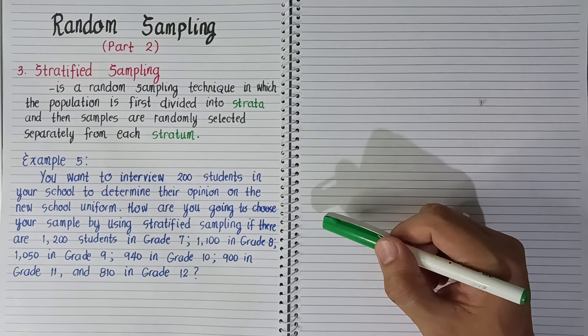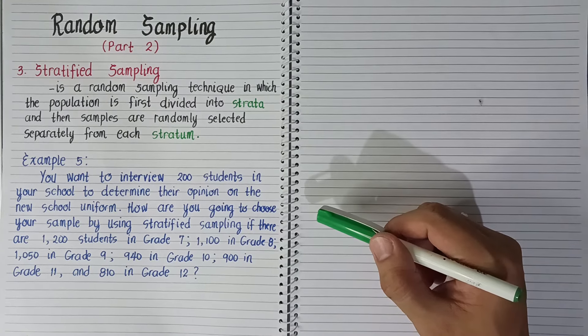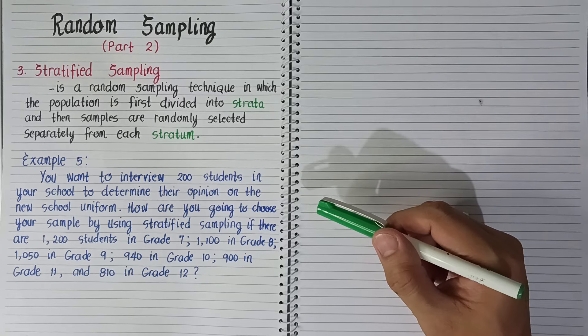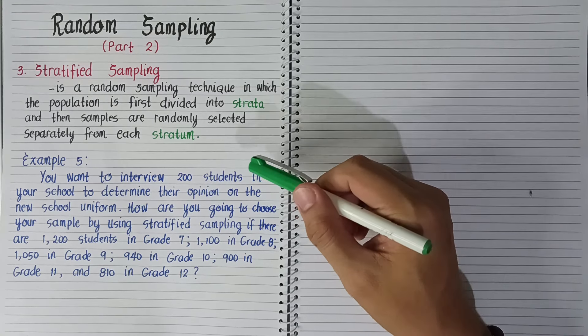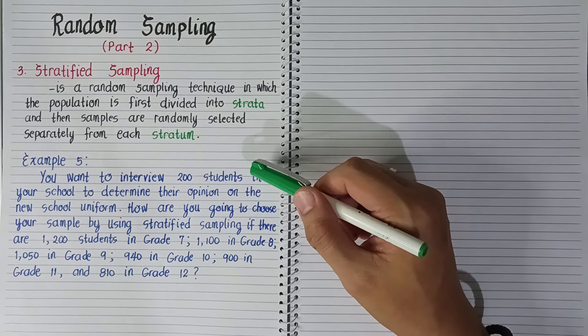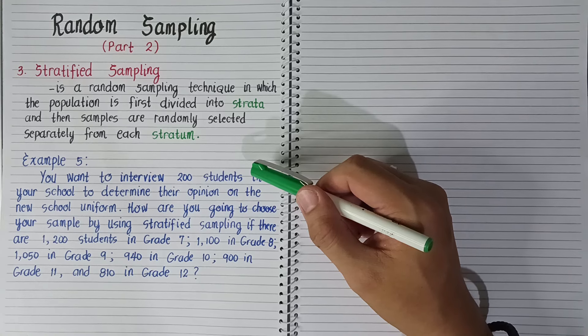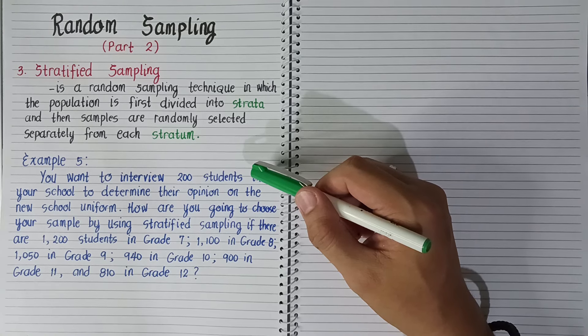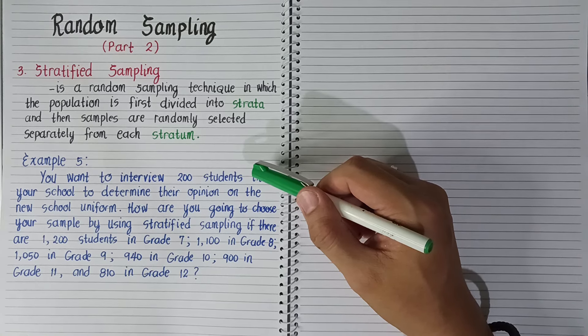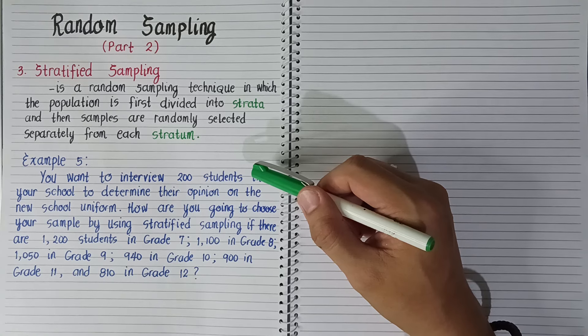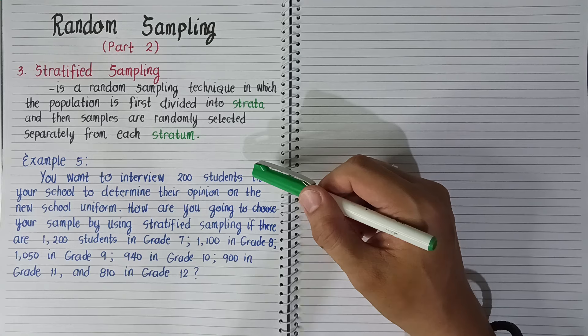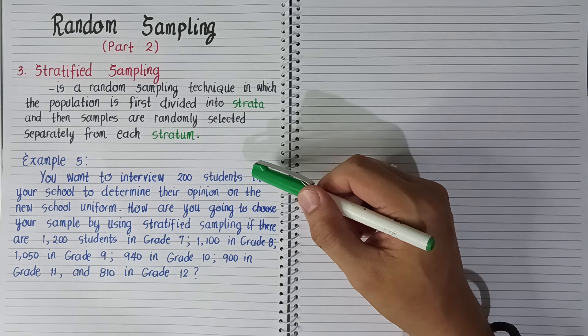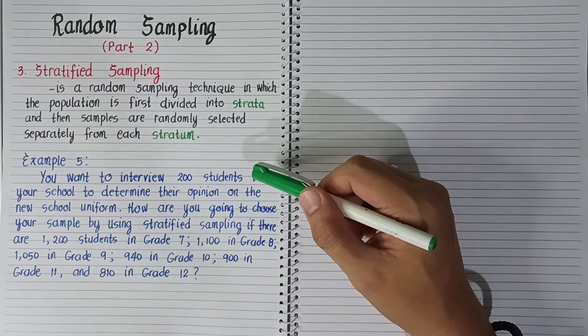How are we going to use stratified sampling in selecting our sample? For example, you're divided into three groups and each group will have representatives. Those representatives from each group will be our sample.